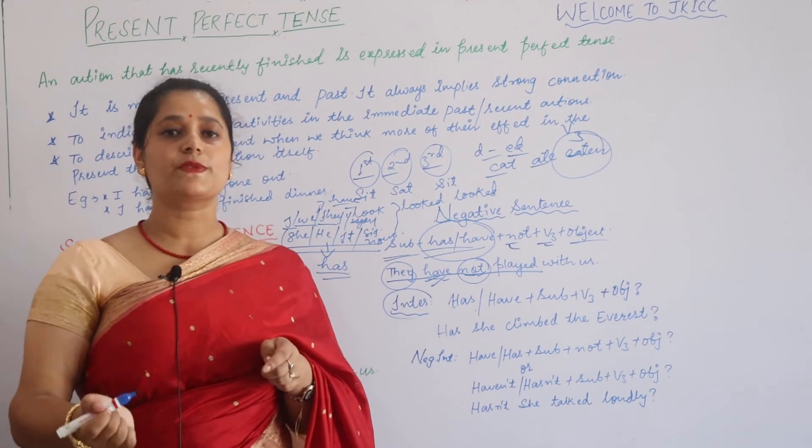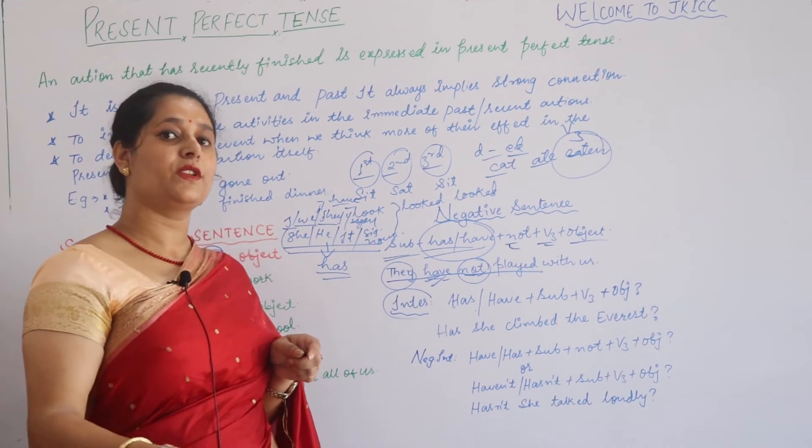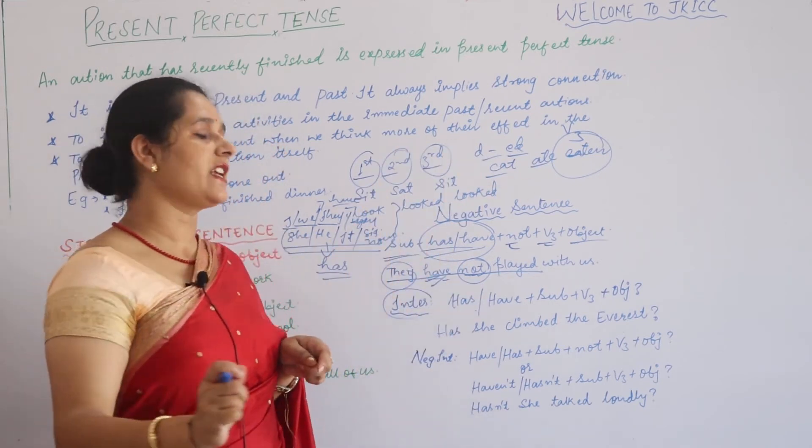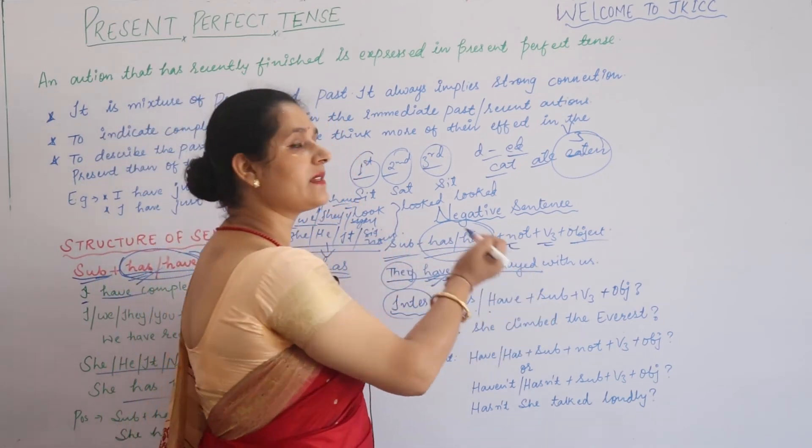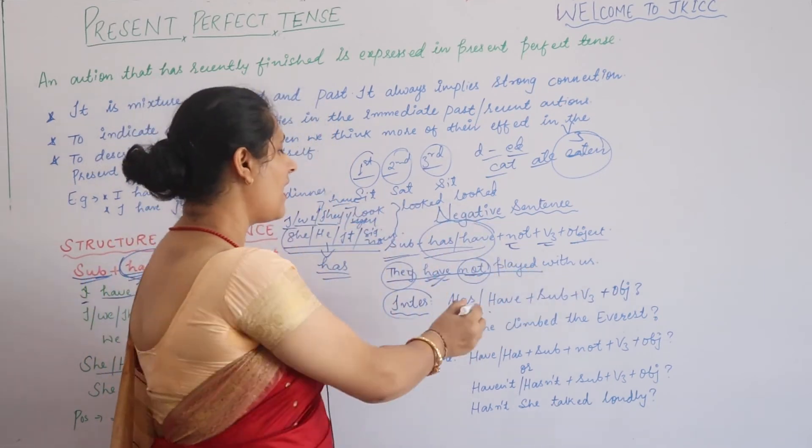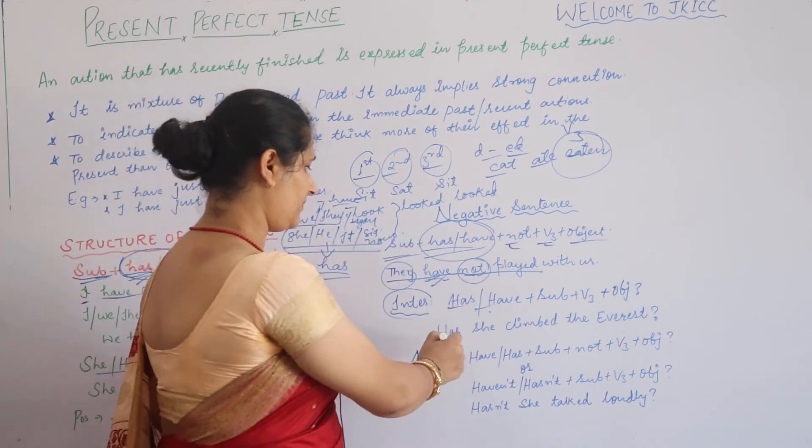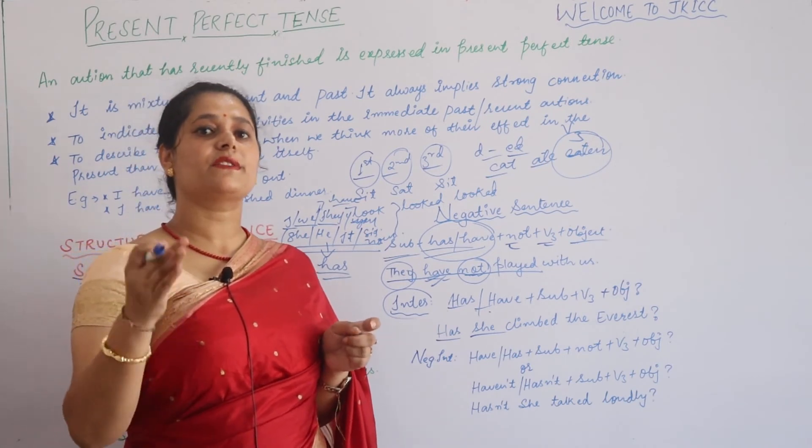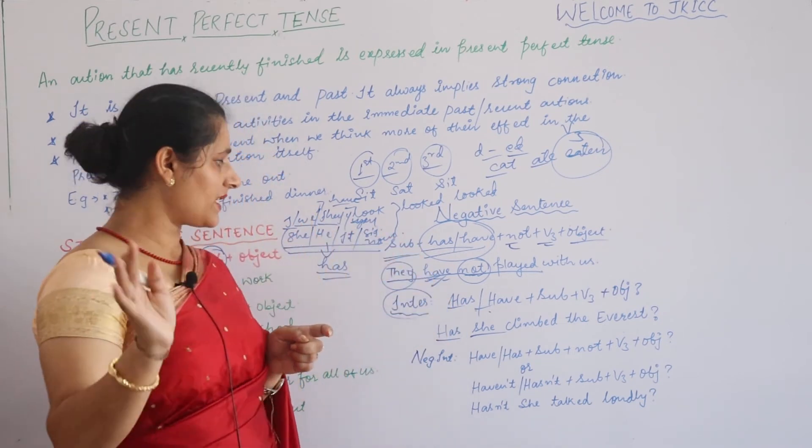And what about interrogative sentence? If you want to ask a question in present perfect tense, how will you ask? Again, we will bring auxiliary verb in the beginning of sentence - has/have in the beginning of sentence, and then subject, and third form of verb, and object, and then question mark. Has she climbed the Everest? Have they learnt whatever I taught? This is the interrogative sentence.